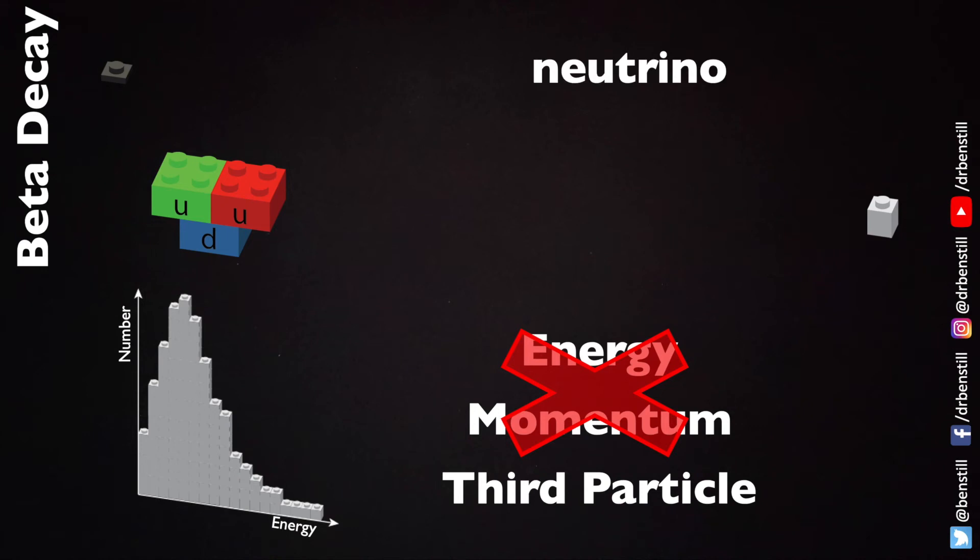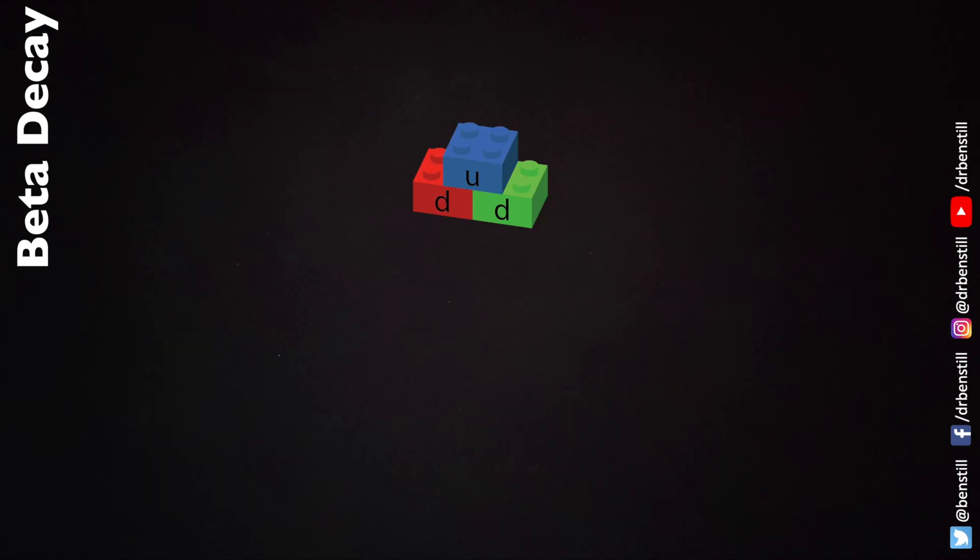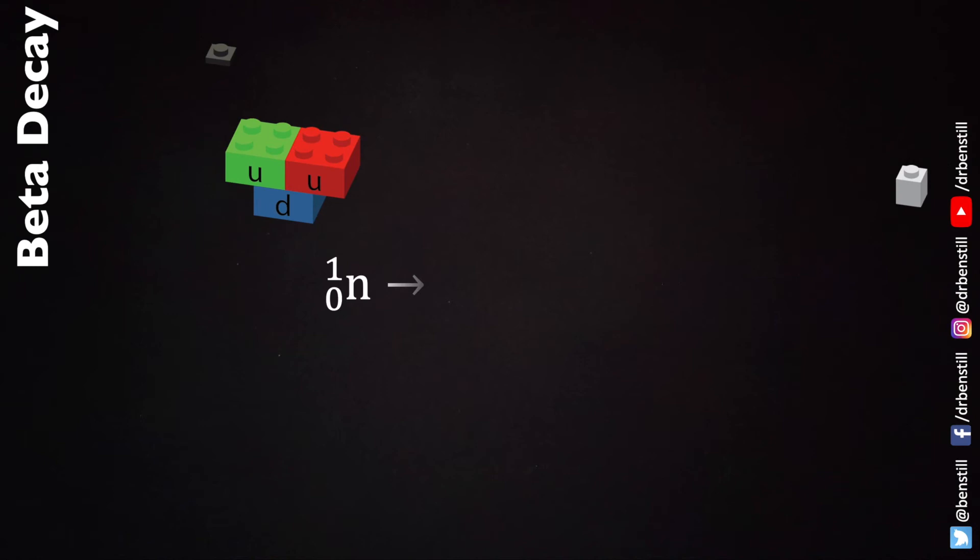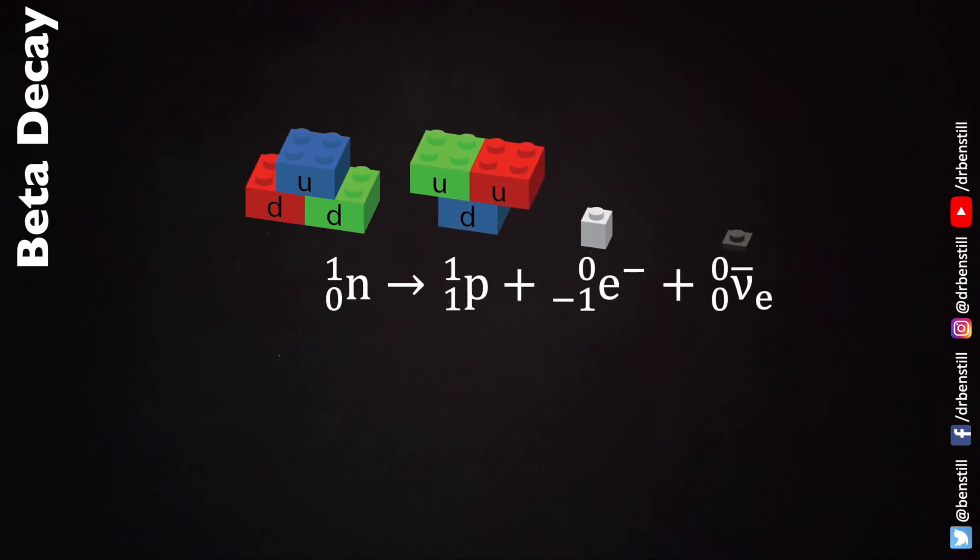In fact the particle that's emitted in beta minus decay is the anti-electron neutrino. So we have our neutron and we now know there are three particles that result in its decay. There is a proton, there is an electron and there is an anti-electron neutrino. And so this is our full equation for beta decay. Of course the anti-electron neutrino must have zero for nuclear number and zero for proton number if it is not to affect the nuclear equation. And of course this particle must have zero electric charge if it is not to affect the balance in electric charge before and after.